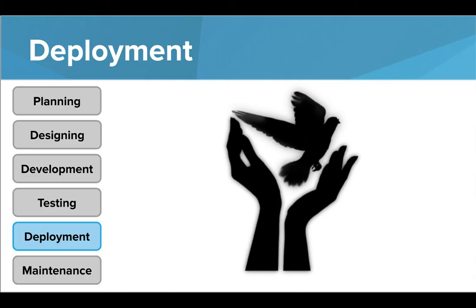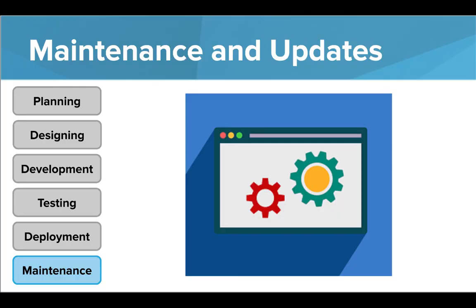After testing is successful and feedback is addressed, the product is ready for deployment. The application, website, or product can now be released either to the company or to the public. But we're not done here — there is one more stage called the maintenance stage. Software and tools can change or evolve. This stage ensures that everything continues to work and sends out updates if new features or integrations are needed.